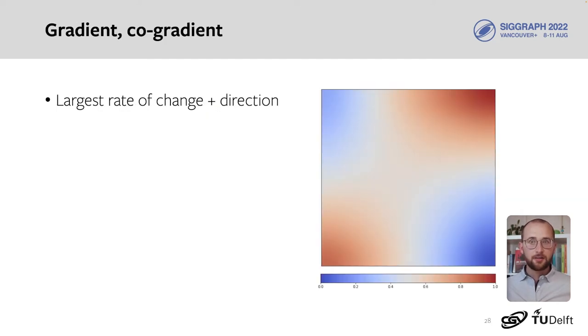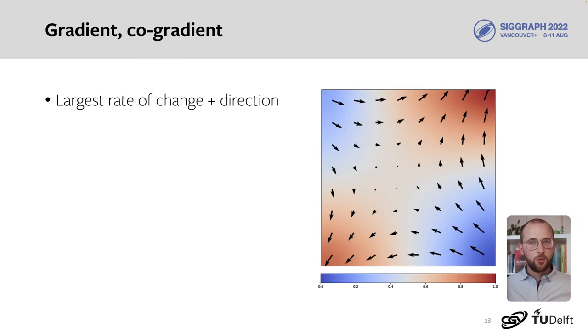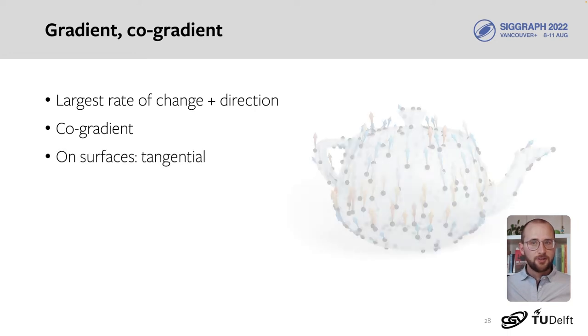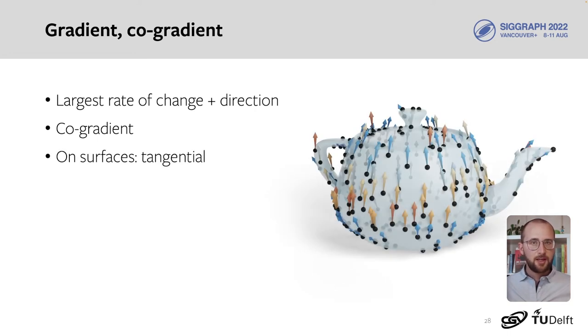Next, the gradient and co-gradient. The gradient represents the largest rate of change and the direction of that change as a vector at each point. The co-gradient is a 90-degree rotation of this gradient, which in practice allows us to rotate vectors. On surfaces, gradients can be fully represented as tangent vectors.